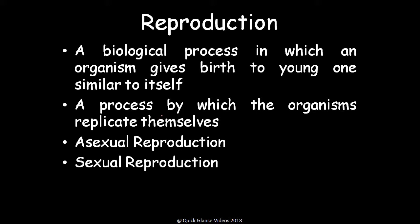What is reproduction? It is a biological process in which the organism gives birth to offspring or young ones, which may be similar or different to them. There are two modes of reproduction in organisms — asexual and sexual methods.